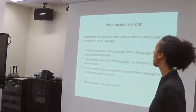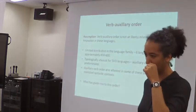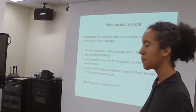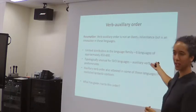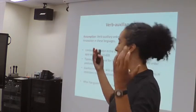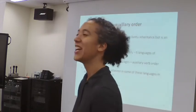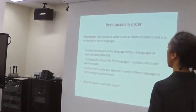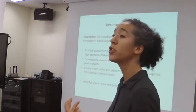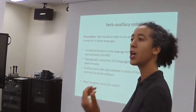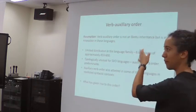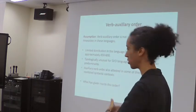I want to assume — and I hope to convince you — that the verb-auxiliary order is not of Bantu inheritance but is some kind of innovation. I'm assuming this because even with six languages out of roughly 450 Bantu languages, it's still a small number. It's unusual for SVO languages, and in some of these languages you still find auxiliary-verb order in specific tenses or syntactic contexts. So the dominant verb-auxiliary order is unusual.